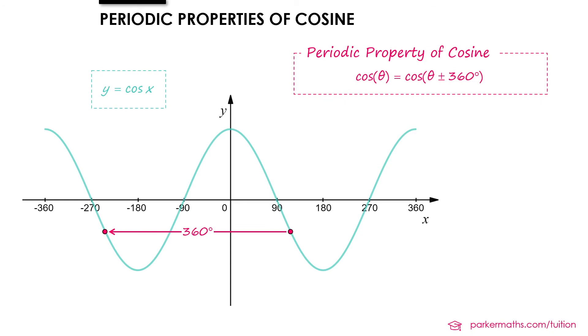And the same thing applies when we're solving an equation involving cos. We can take our first solution and we can add or subtract 360 degrees from it to get more solutions.